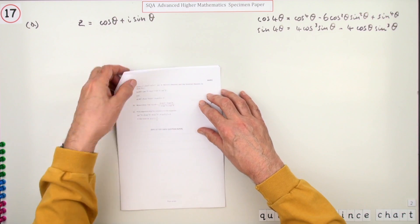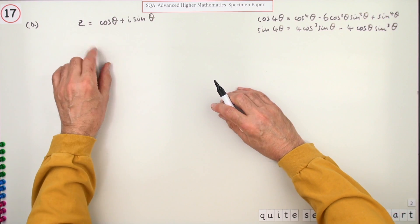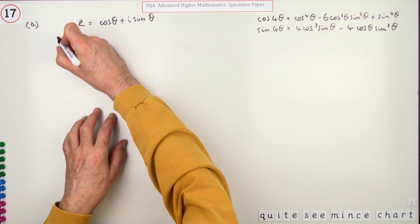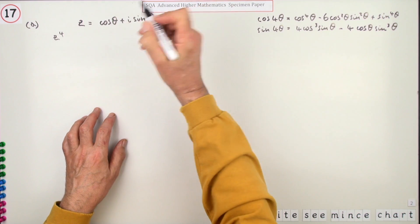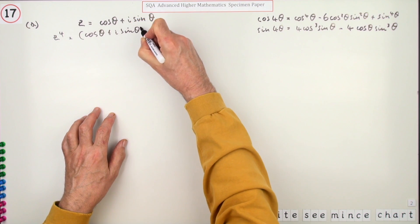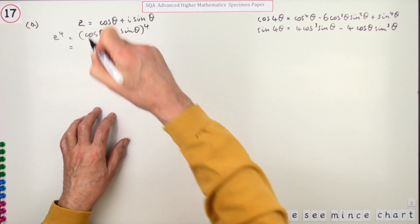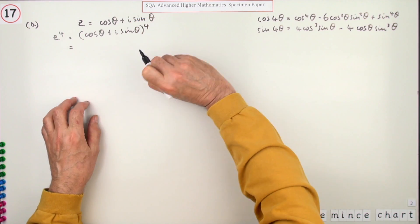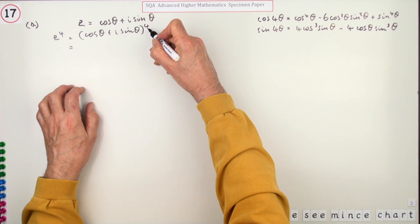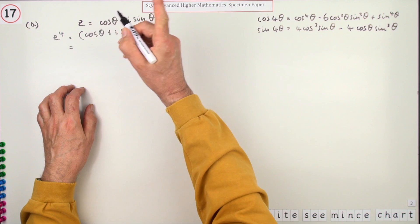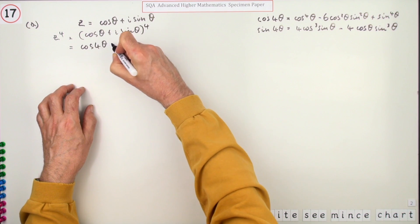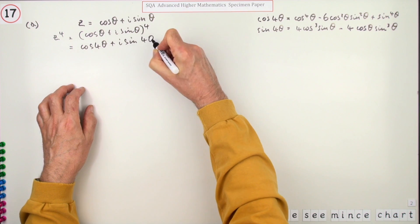De Moivre's theorem requires a power, and with the fours appearing in the identities it must be a power of four. Taking z to the power four gives (cos θ + i sin θ)^4. Using De Moivre's, since the modulus is just one it won't be affected, so it simply becomes cos 4θ + i sin 4θ.